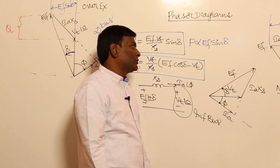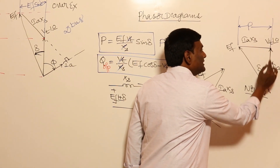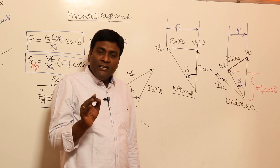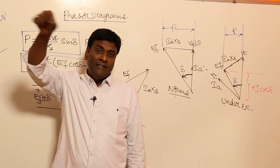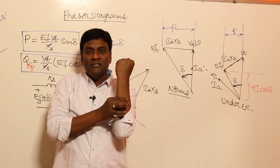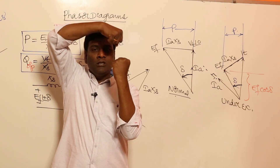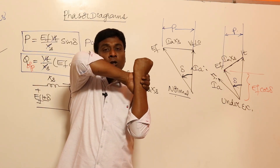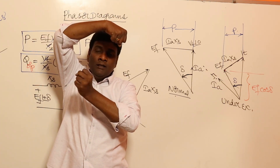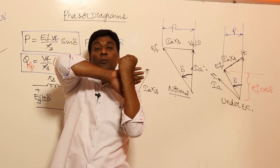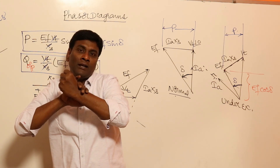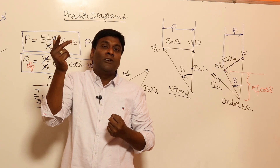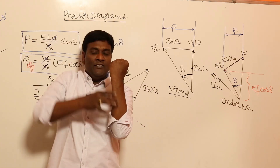One final conclusion: Ef always leads Vt in a generator (alternator). This is because if the field pole is ahead of the resultant pole, both rotating in the same direction, there is a back torque, but the prime mover resists this and converts mechanical energy into electrical energy. So the field pole must lead the resultant for generator action.